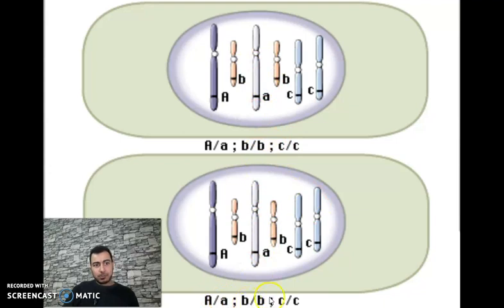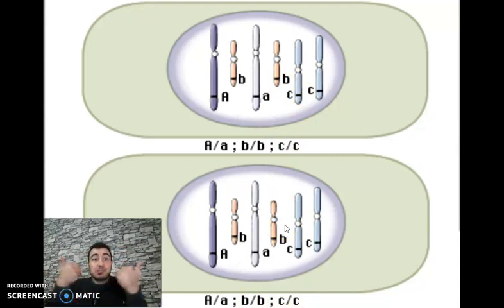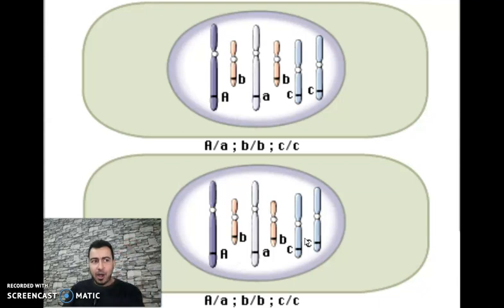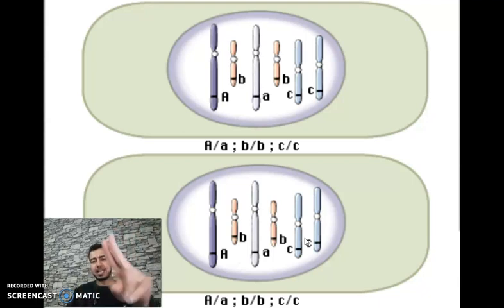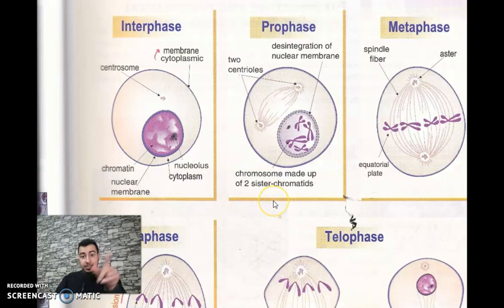The two resulting cells have the same genetic information: A capital, A small, B small, C small — identical to each other and identical to the mother cell from which they divided. So mitosis conserves genetic information and also conserves the number of chromosomes.